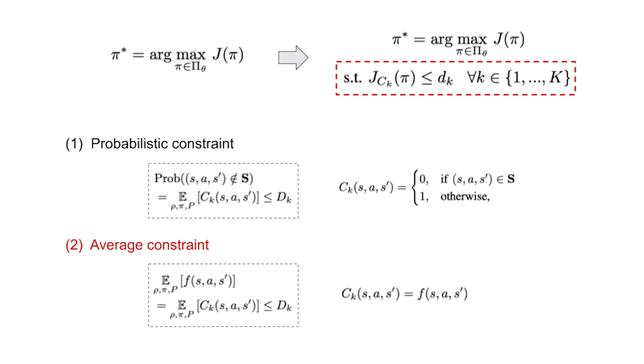An average constraint is used to restrict the average of some physical values of the robot to be below a desired threshold.